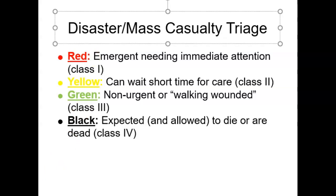Let's go through some examples to determine which color tag you would assign. You can pause the video to read the questions if needed. A patient with a closed fracture would receive a green tag — considered walking wounded or non-urgent. A patient with an open fracture but intact pulses would receive a yellow tag — the presence of pulses is a good sign.